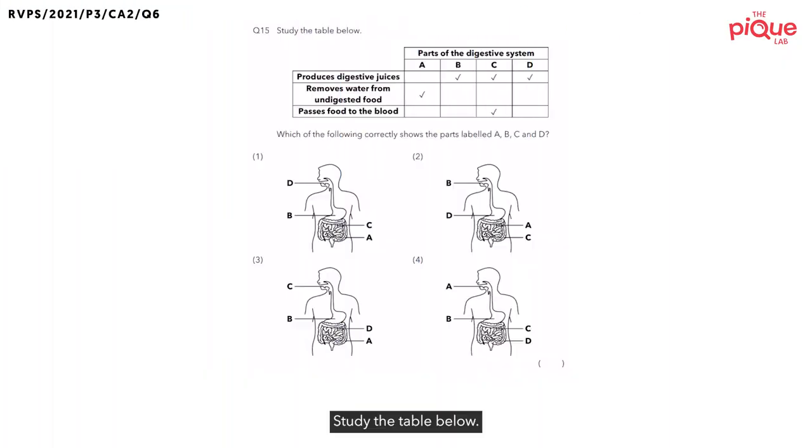Question 15. Study the table below. Now, they want us to find out which of the following here correctly shows us the parts labeled A, B, C, and D. So, before we can even look at the options, let's try and figure out what parts A, B, C, and D are in the first place.